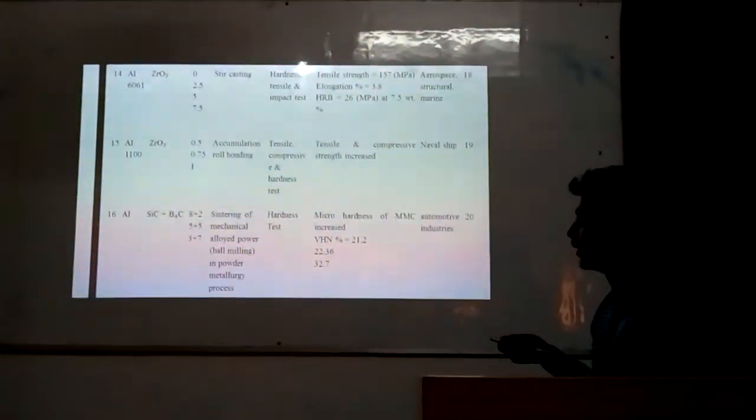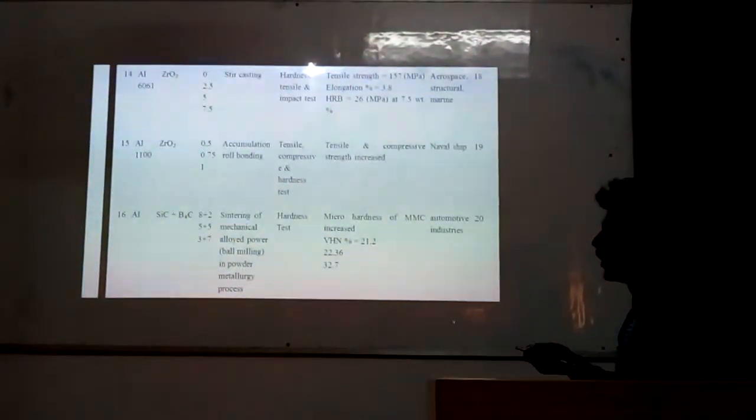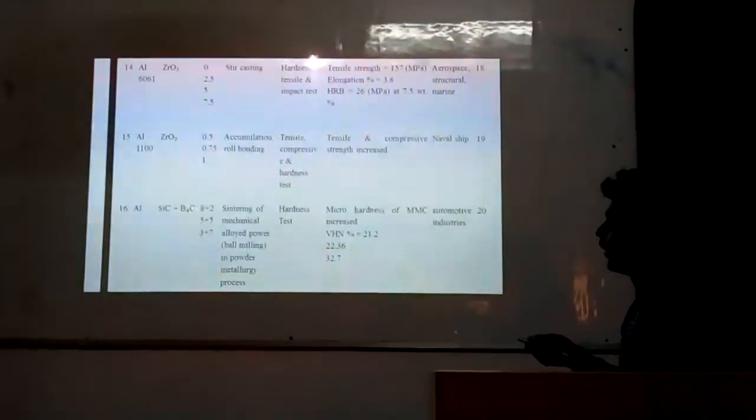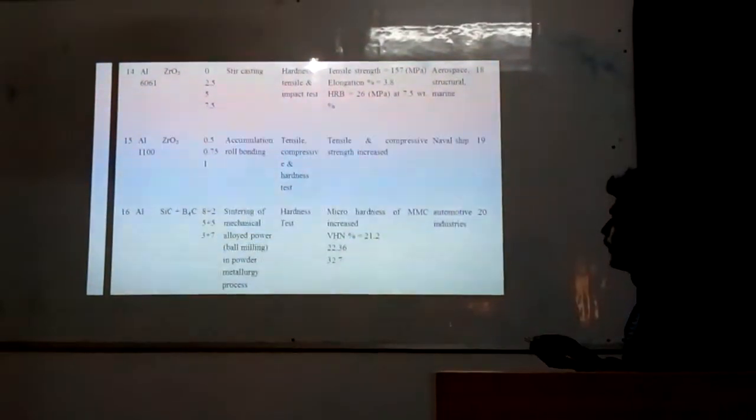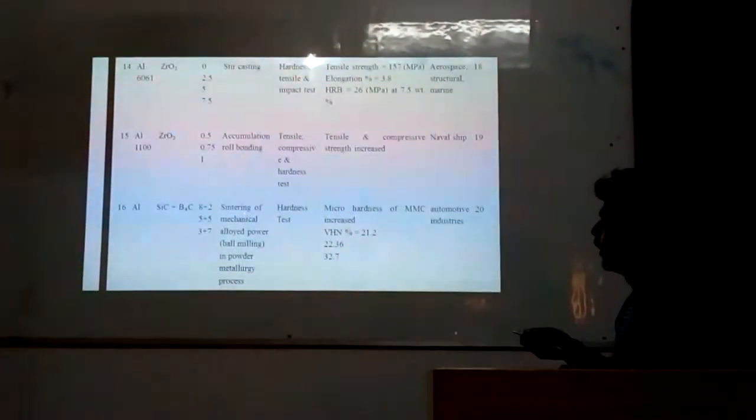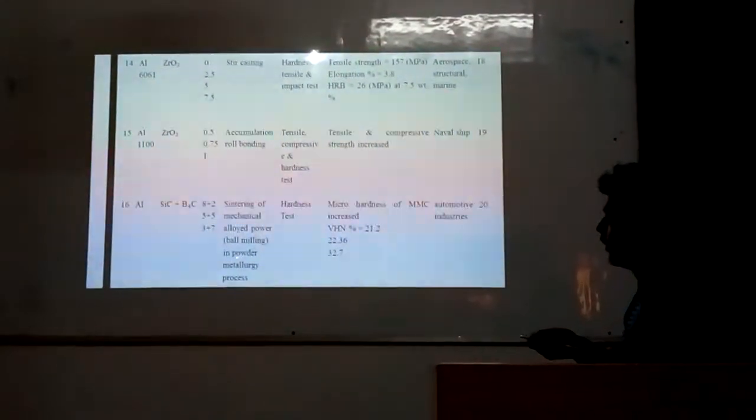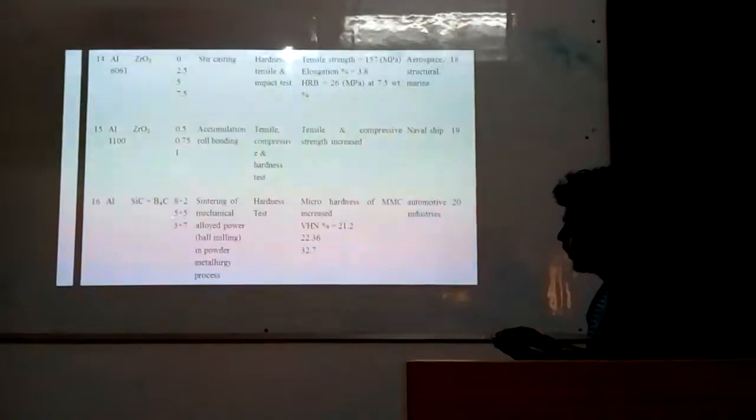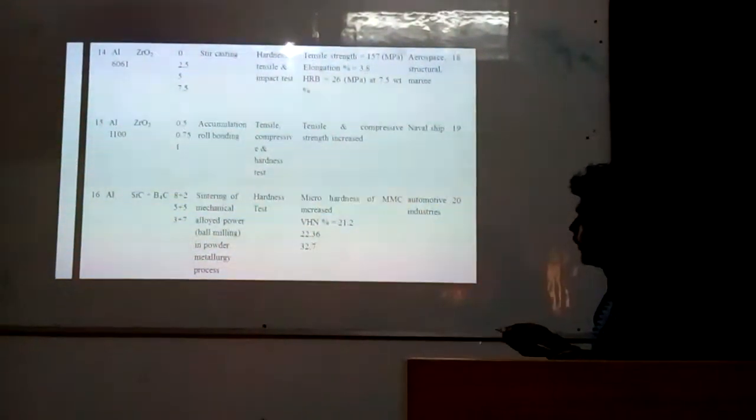Let's see serial number 16. Aluminum is reinforced with silicon carbide and boron carbide in weight percentage of 8% plus 2%, 5% plus 5%, and 3% plus 7%. Sintering of mechanical alloyed powder in powder metallurgy process. This composite is made by powder metallurgy.